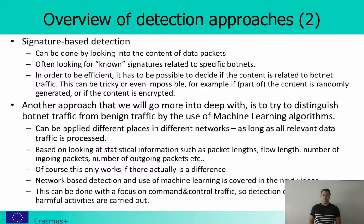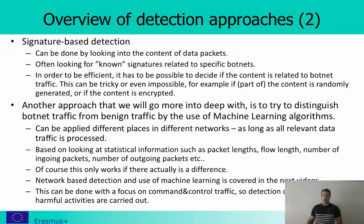What we look at is statistical information about the network flows, such as packet length, flow length, number of ingoing packets, number of outgoing packets, port numbers, which countries we are communicating with, or even which continents we are communicating with. Of course, this works only if there is actually a difference — we can only distinguish malicious from non-malicious activities if a difference exists between them.